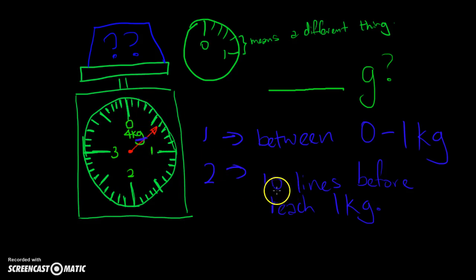As we said, there are actually 10 lines before you reach 1 kg, which actually means that 1 line gives me 100 grams.